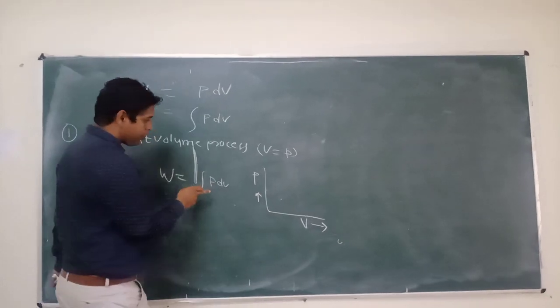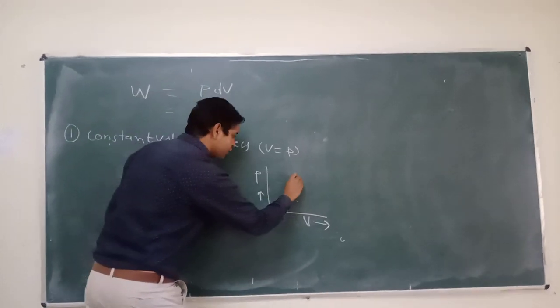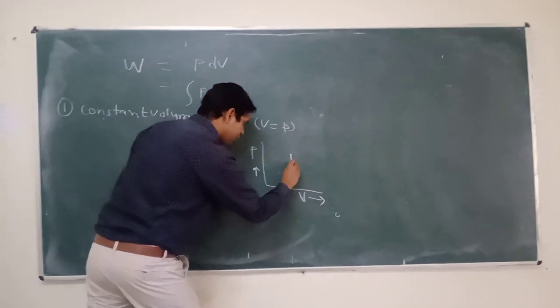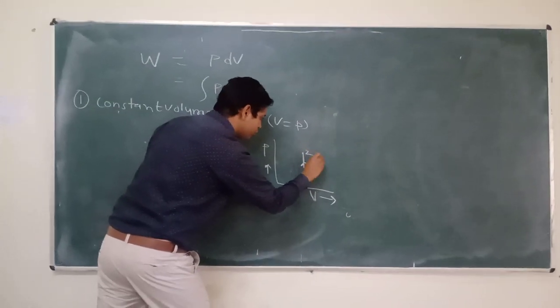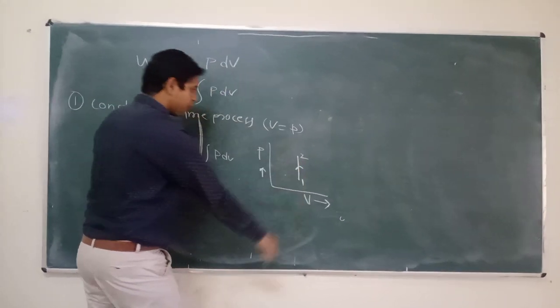We will draw constant volume, that means process will be like that, straight line process, 1 to 2, constant volume.